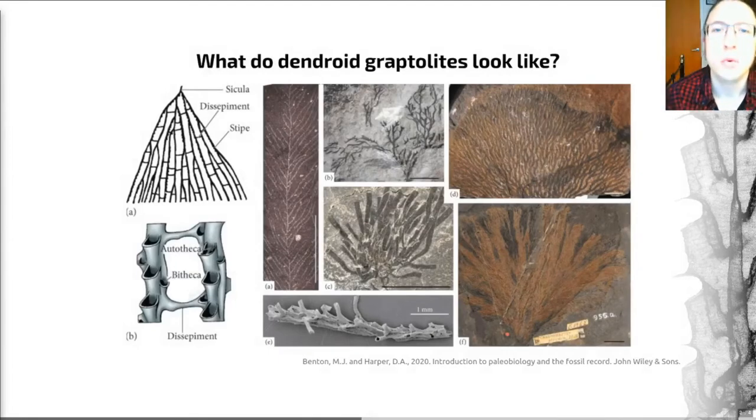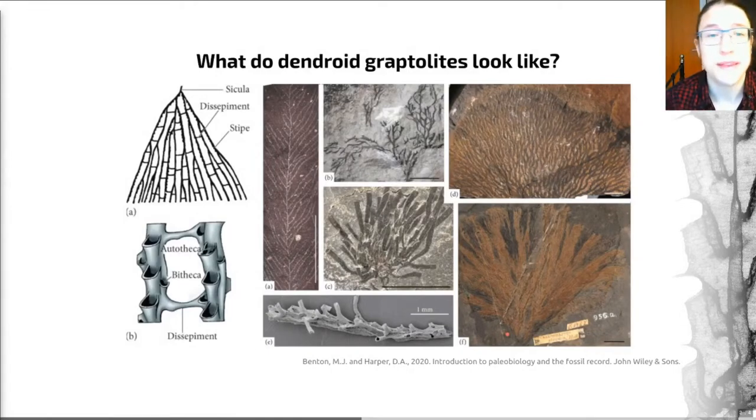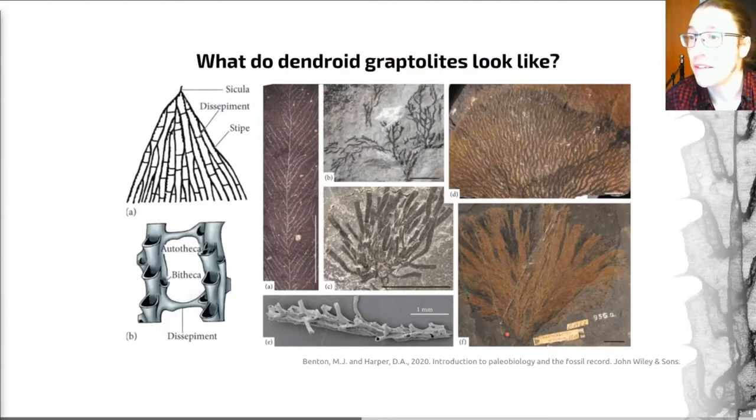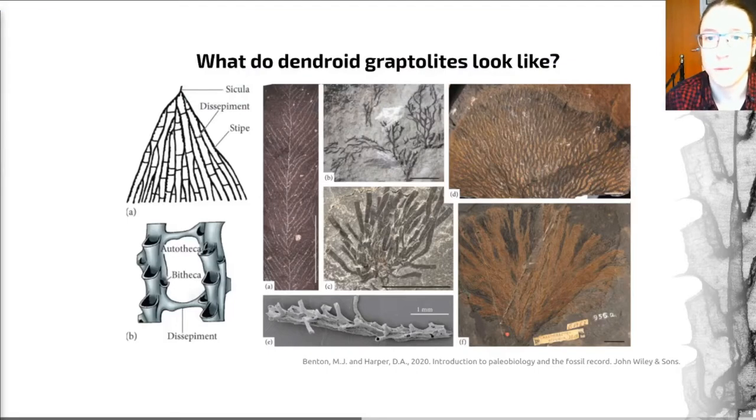The dendroidea is the older of these two main groupings. These creatures appeared in the middle Cambrian and disappeared in the late Carboniferous. They are marked by having a tuberium that was multi-branched, looking a bit like a bush with its many stipes connected laterally by dissepiments. These creatures have two types of theca of different sizes called the Autotheca and the Bitheca. The group as a whole started as benthic, attached to the seafloor by a short stalk with a basal disc.